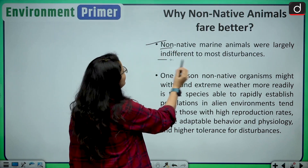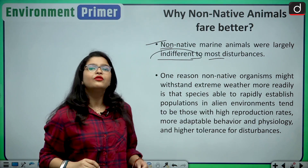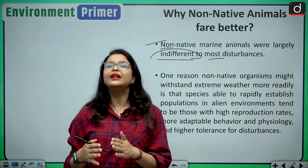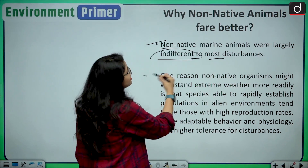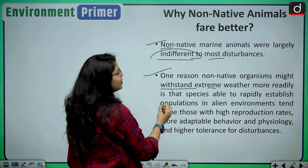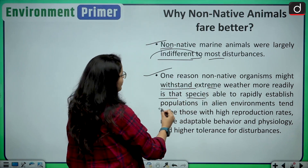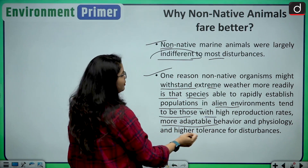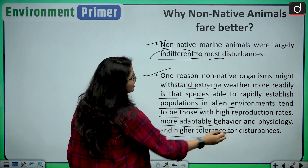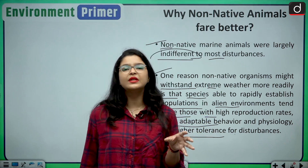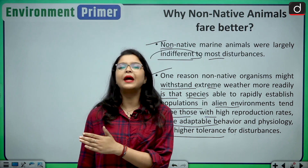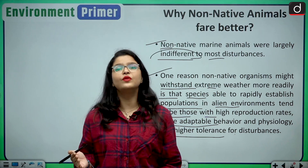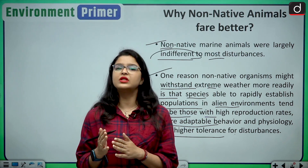Non-native marine animals are largely indifferent to most disturbances. One reason is that they are built to adapt to alien environments. Species that are able to establish populations in alien environments tend to have high reproduction rates, more adaptable behavior and physiology, and higher tolerance for disturbances. These non-native species are very tolerant to the changing impacts of climate change and are able to reproduce and adapt as the environment changes.